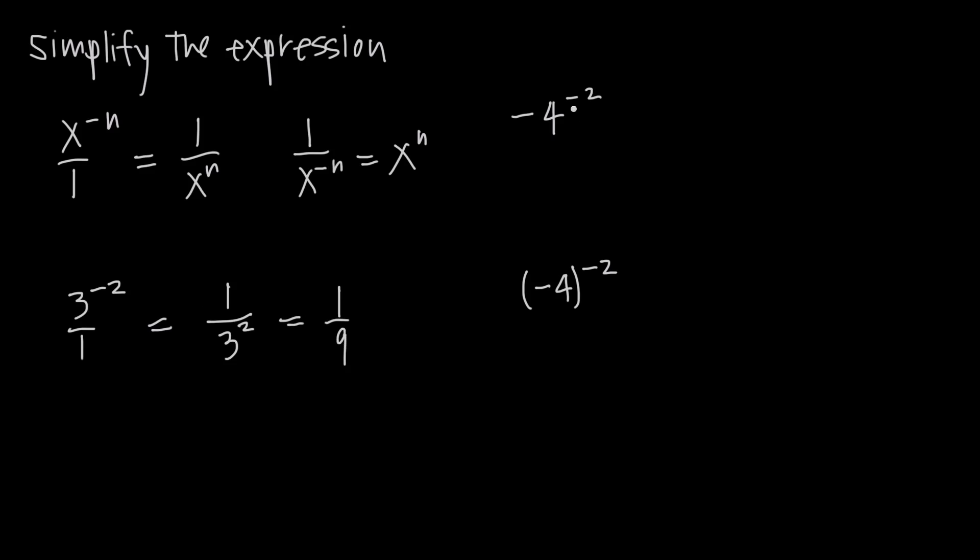If we look at this example here, we have to be careful when we're dealing with negative bases. Notice we have two examples, one where our negative sign is not inside parentheses with the 4, and one where it is. When it's not inside our parentheses, our order of operations tells us that we have to do the exponent first.